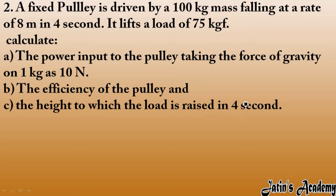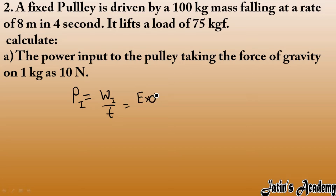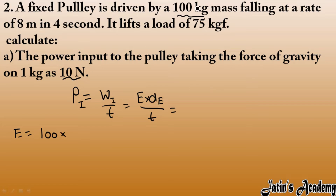First, we have to calculate power input to the pulley. Power input equals work input over time. Work input means we are applying the force on the machine, so we take effort into displacement of effort over time. The effort here is the force applied on the machine, given as 100 kg. Converting to newtons: 100 kg × 10 = 1000 newton.